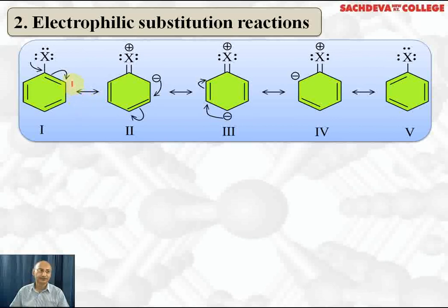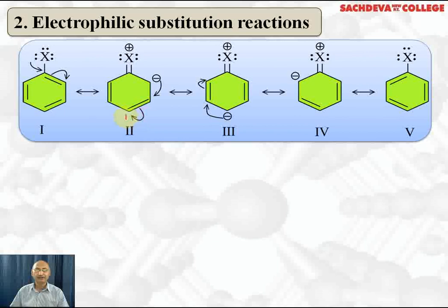With the help of resonating structures: the lone pair of electrons takes part in double bond formation. This pair of electrons shifts to the ortho position, so we get a negative charge at the ortho position. A double bond forms and halogen acquires a positive charge because it has donated a pair of electrons for double bond formation.